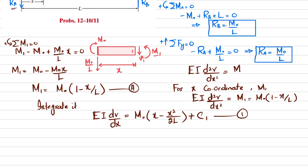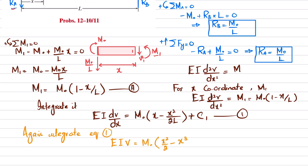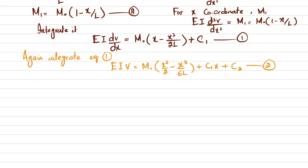Integrating equation one again: EI · v = M₀[x²/2 − x³/(6L)] + C₁·x + C₂. This is equation two. We have two unknowns, C₁ and C₂, which will be found using boundary conditions.